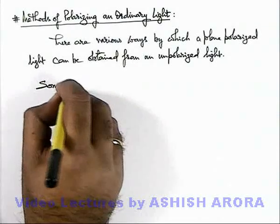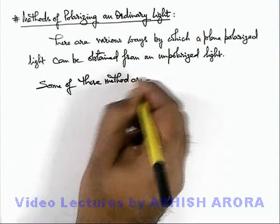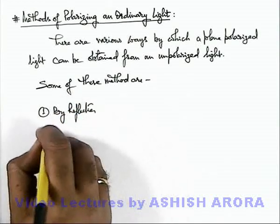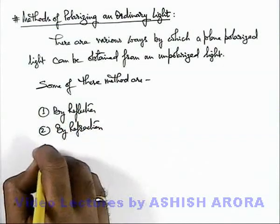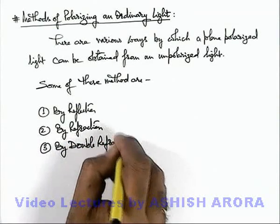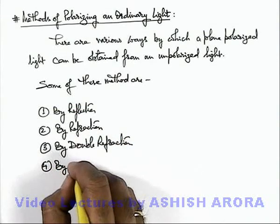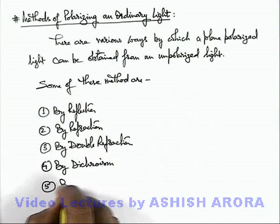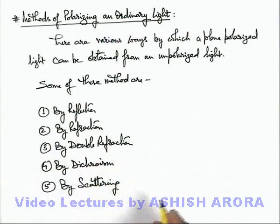Some of these methods which we're going to study in detail are: by reflection, by refraction, by double refraction, dichroism — a different phenomenon which we've not studied till now — and by scattering. These are the methods we'll study one by one in the coming sections.